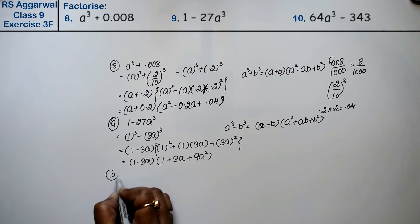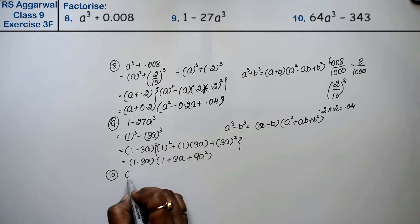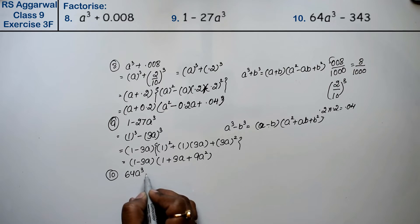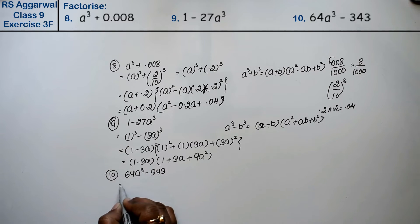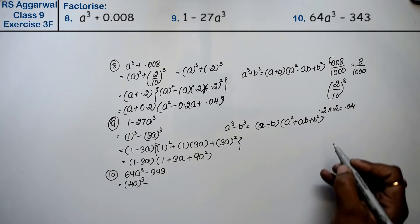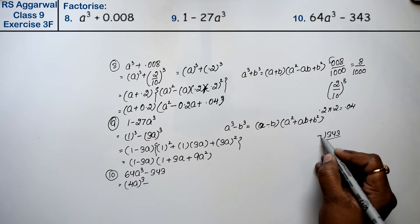Let's do question number 10: 64a³ minus 343. We know that 64a³ is (4a)³ and 343 is 7³.